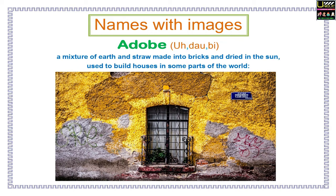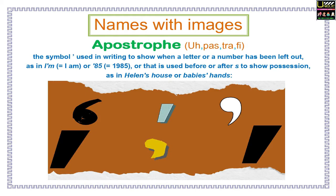E as in Names with images. Here I have a word with its pronunciation, explanation and an image for you. Adobe: a mixture of earth and straw made into bricks and dried in the sun, used to build houses in some parts of the world. Apostrophe: the symbol used in writing to show when a letter or a number has been left out, as in 'I'm' meaning 'I am', or '85' meaning '1985'.